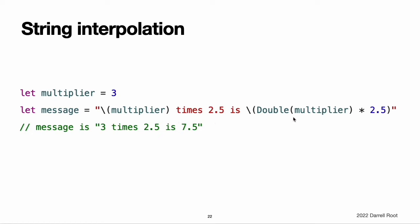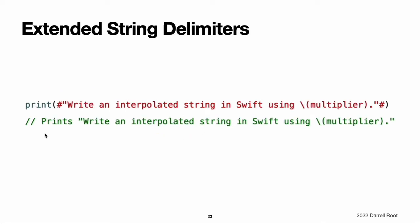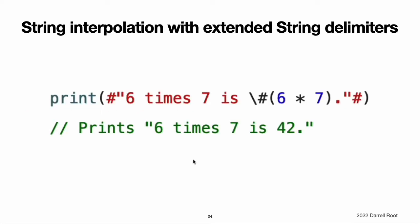The value of multiplier is also part of a larger expression later in the string. This expression calculates the value of double multiplier times 2.5 and inserts the result, 7.5, into the string. You can use extended string delimiters to create strings containing characters that would otherwise be treated as a string interpolation. To use string interpolation inside a string that uses extended delimiters, match the number of number signs after the backslash to the number of number signs at the beginning and end of the string. Note: the expressions you write inside parentheses within an interpolated string cannot contain an unescaped backslash, a carriage return, or a line feed. However, they can contain other string literals.